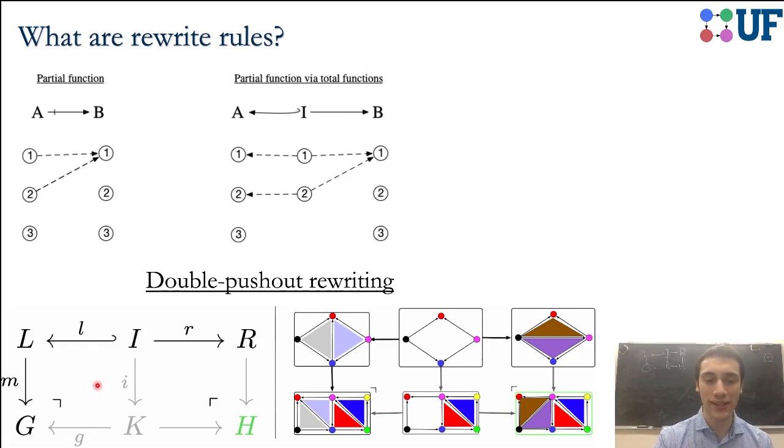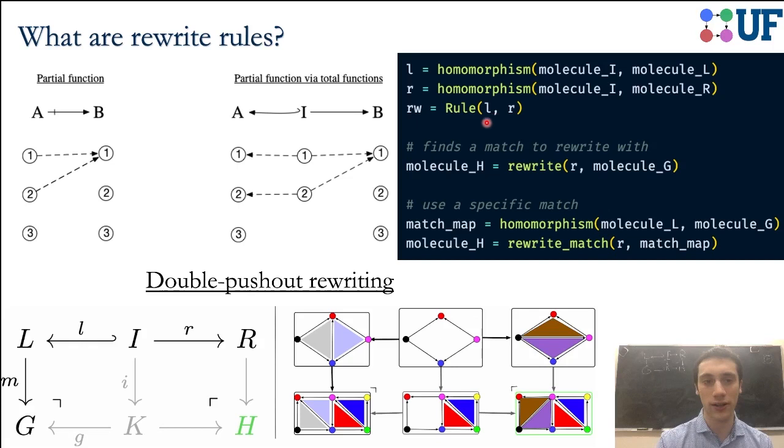How do we apply this rewrite rule? What we need to apply it is really the data of, well, what is this matching to in our graph of interest? Here we're matching to this left-hand pair of triangles. If we perform this thing called a pushout complement, then we perform the deletion, and then when we perform this pushout, we get the result of the rewrite.